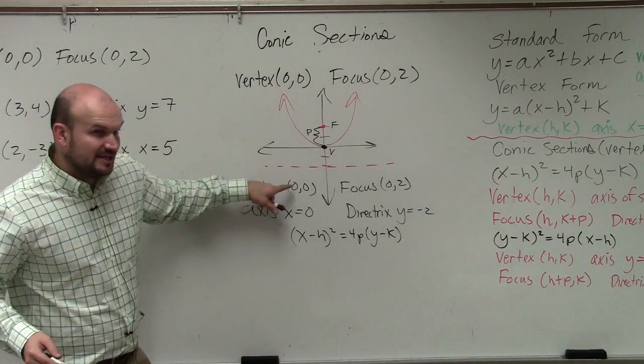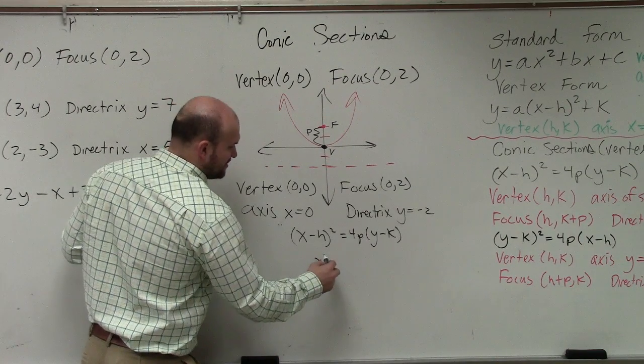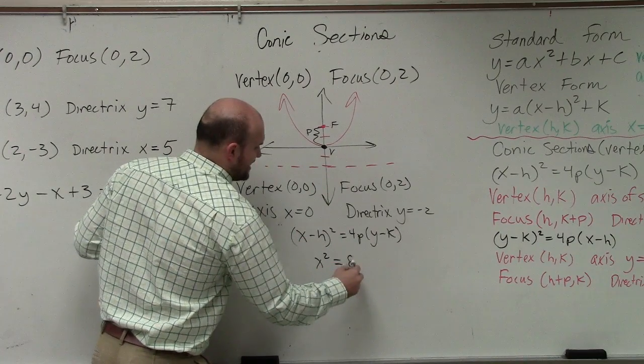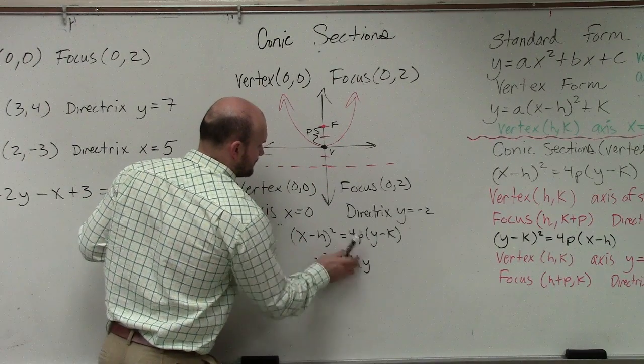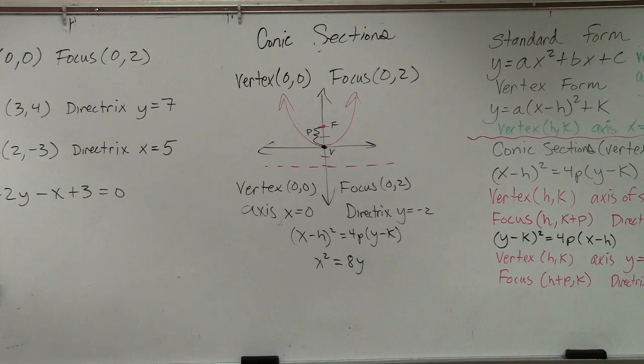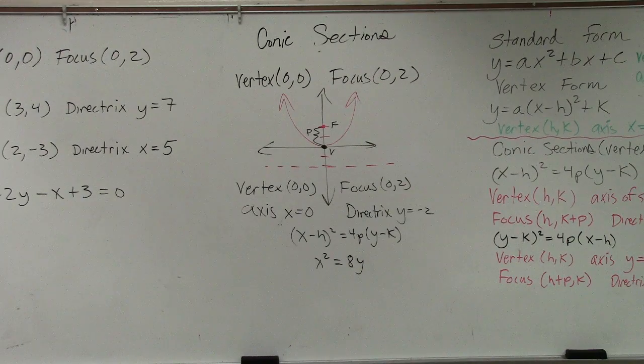Whereas h and k represent the vertex. So really, that's just (x - 0)² which is just x². p is going to be 2. So that's going to be 8 times y. That's the equation, because h and k are 0, right?